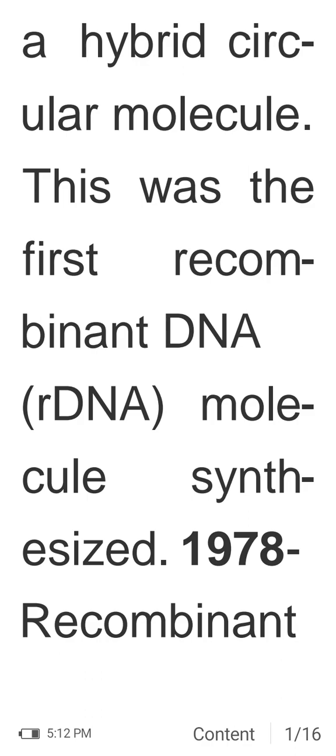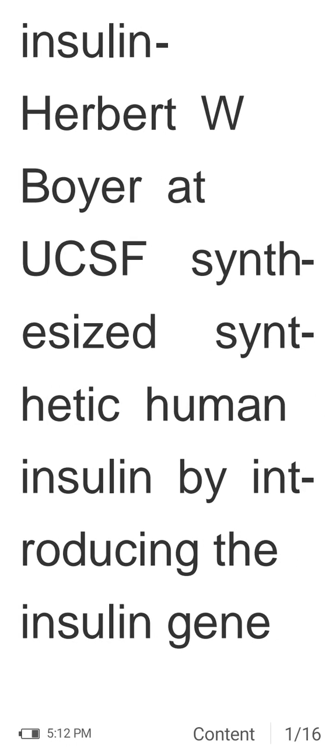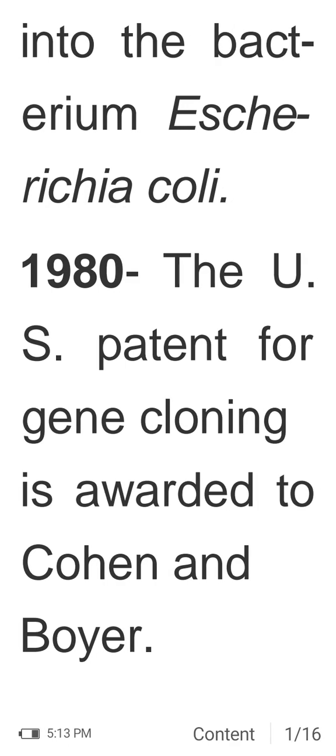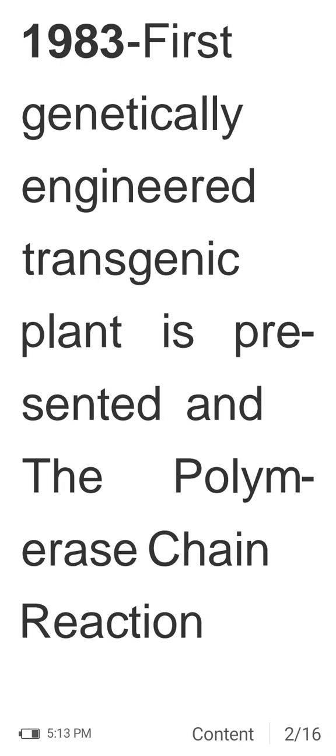In 1978, recombinant insulin was produced: Herbert W. Boyer at UCSF synthesized synthetic human insulin by introducing the insulin gene into the bacterium E. coli. In 1980, the US patent for gene cloning was awarded to Cohen and Boyer.